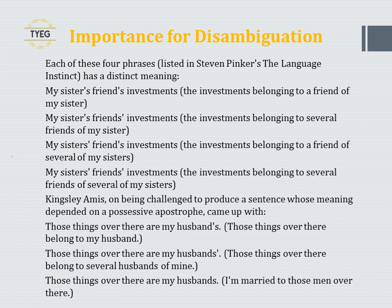Each of these four phrases, listed in Steven Pinker's The Language Instinct, has a distinct meaning: 'My sister's friend's investments' (one sister, one friend); 'My sisters' friend's investments' (several sisters, one friend); 'My sister's friends' investments' (one sister, several friends); 'My sisters' friends' investments' (several sisters, several friends). Kingsley Amis, on being challenged to produce a sentence whose meaning depended on a possessive apostrophe, came up with: 'Those things over there are my husband's' — meaning either 'belong to my husband', 'belong to several husbands of mine', or 'I'm married to those men over there'.